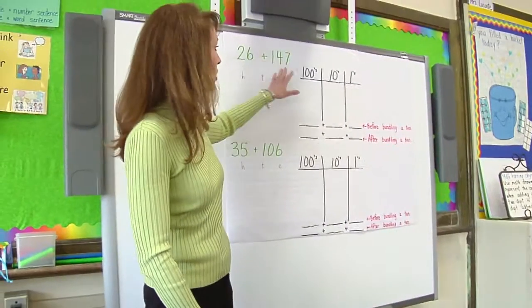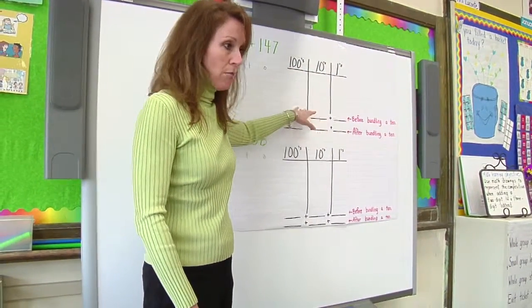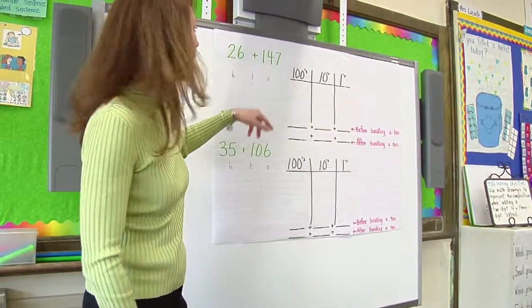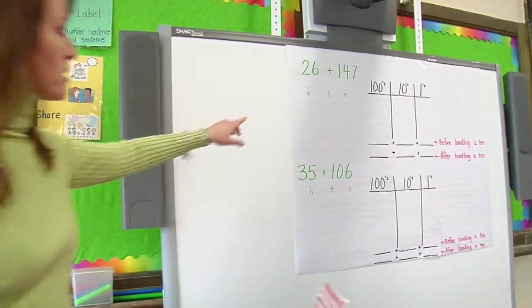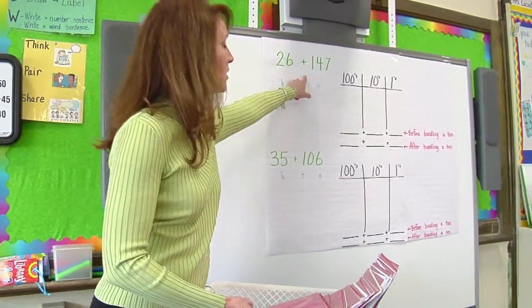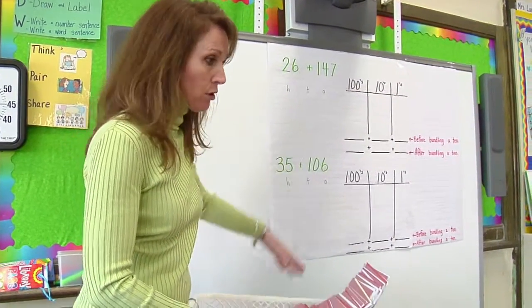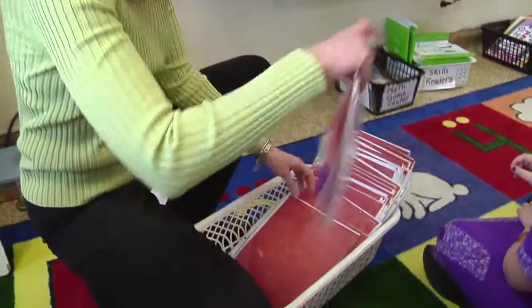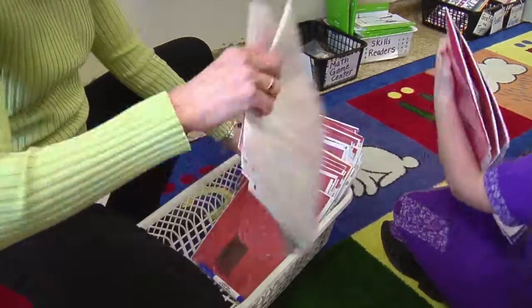And if you notice up here today, we're going to practice adding two-digit and three-digit addends, and we're going to be drawing our chip model to represent the written addition. So when you get your personal board today, I want you to represent this horizontal fact in a vertical way. We're going to pass them out just like we always do, and when you get your board, you can start.